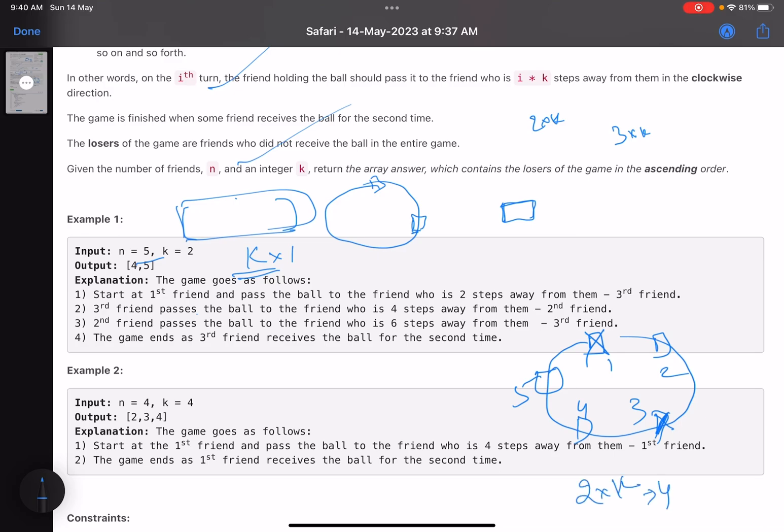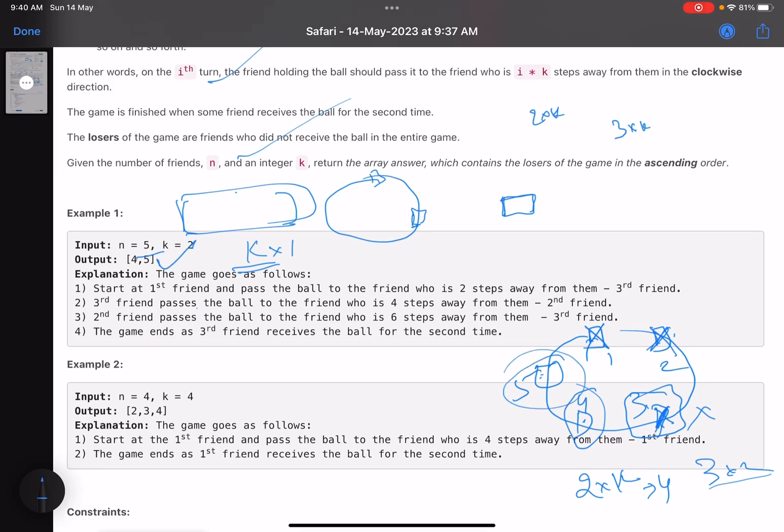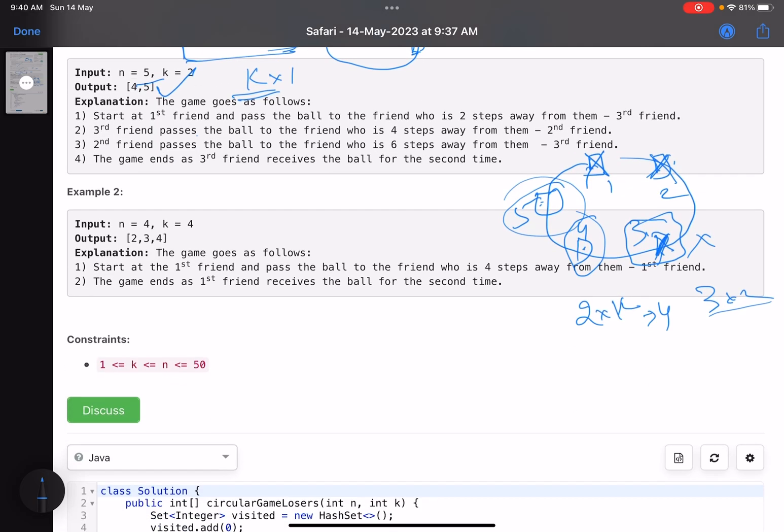So one, two, three, four. This is also done. Now this will pass three times two, six steps away, so one, two, three, four, five, six. Now just see, three has already received the ball, so the game ends. Now when the game ends, how many players have not received the ball? It's player number four and player number five, so the answer is four comma five. This is how you solve this example as well.